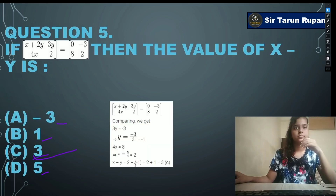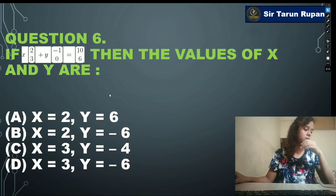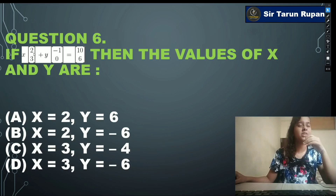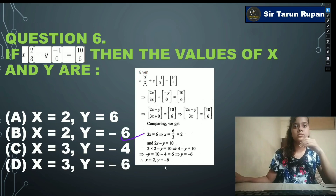Let's see that solution and move to the next question. If [x²+2/x², 3+y; -1, 0] = [10/6, ...], then x and y are — option A: x=2, y=6; option B: x=2, y=-6; option C: x=3, y=-4; option D: x=3, y=-6. Our correct answer is option B: x=2, y=-6.